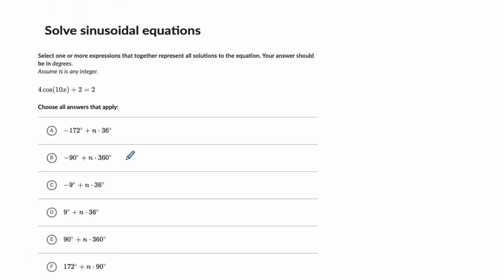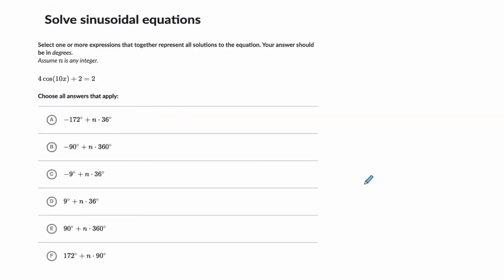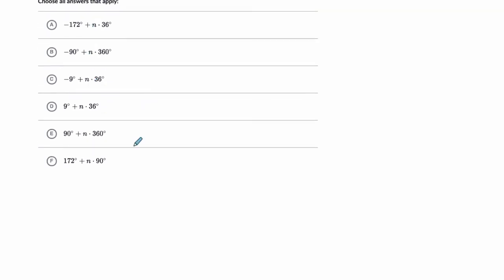Now, the next problem. Here we have something very similar. Just notice here we're in degrees, and we're given 4 times the cosine of 10x plus 2 equals 2. So I'm going to solve this, and I'm going to move a little bit quicker now. 4 times the cosine of 10x plus 2 equals 2. Subtract 2 and divide by 4. We get the cosine of 10x is 0.